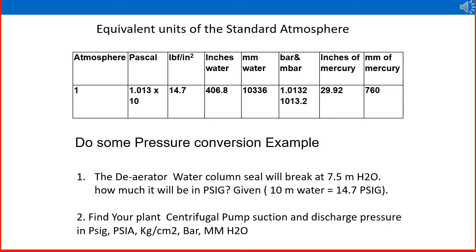Similarly, find the centrifugal pump suction and discharge pressure from your plant in psig, psia, kg per centimeter square, bar, and millimeters of H2O. Convert any pressure reading in your plant into various units like atmosphere, Pascal, psi, inches or millimeters of water, and bar. Do this a couple of times to get confidence and clearly understand pressure basics and unit conversion.